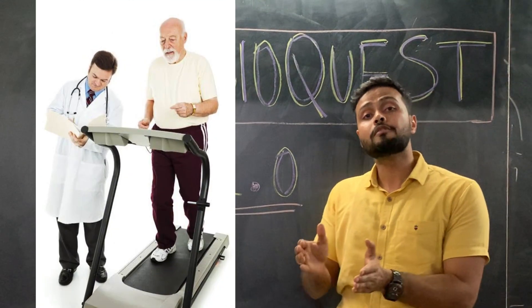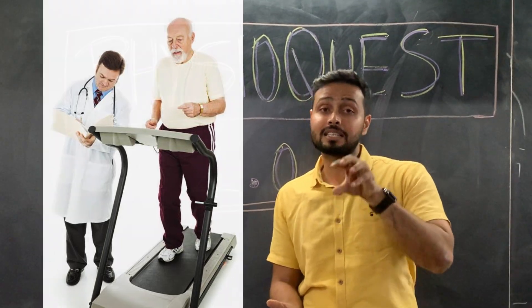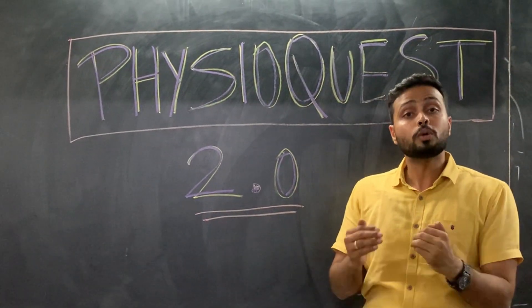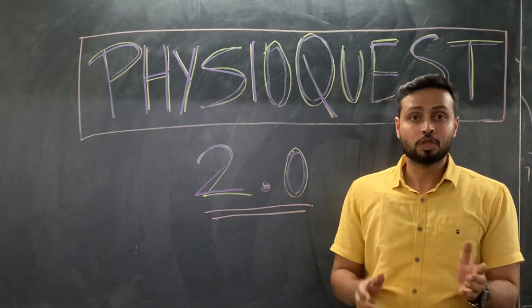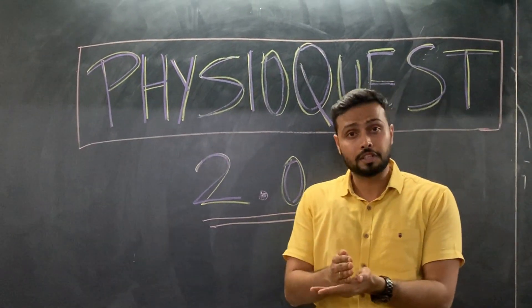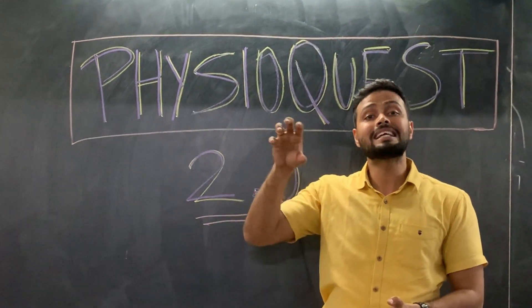Option C is minimal level treadmill test. Yes, this test can be used to initiate the second phase of rehabilitation in cardiac rehab. We check for the minimum treadmill test before entering the patient in the second phase of cardiac rehabilitation.